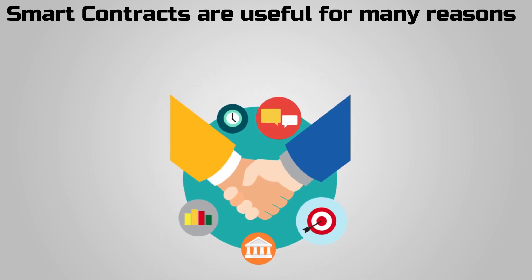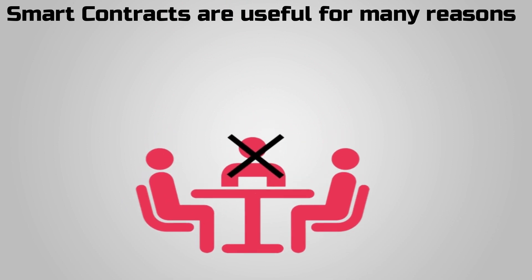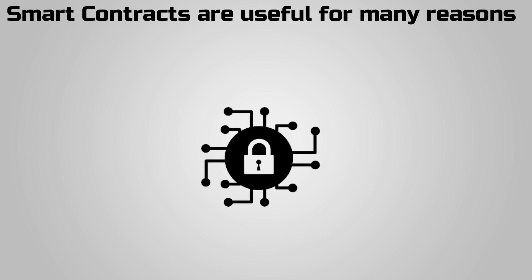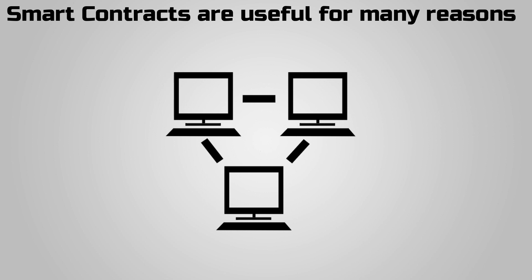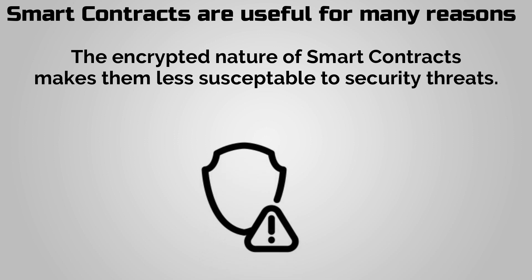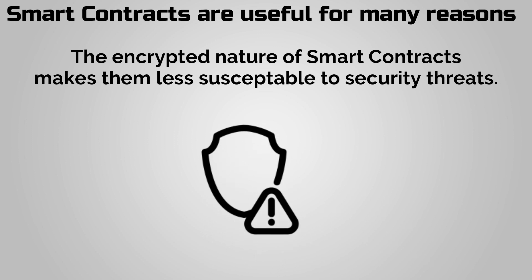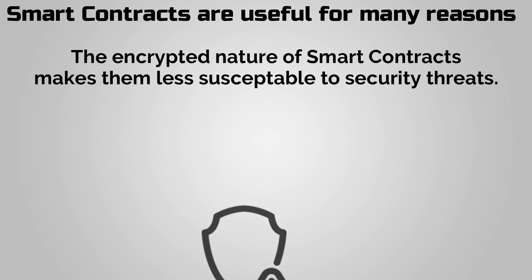They create trust between otherwise untrusted parties. There is no third party who could be influenced by any of the parties for personal gains. The encrypted records of all transactions are shared with all participants via a computer network, ensuring transparency and preserving the agreement. The encrypted nature of smart contracts makes them less susceptible to security threats, and their use of blockchain technology — a kind of distributed ledger system — makes it difficult for transactions to be altered or manipulated.